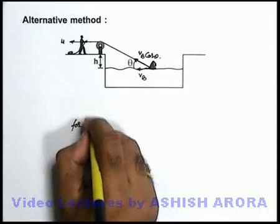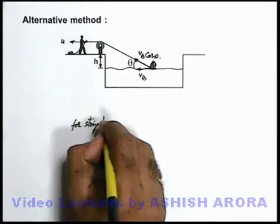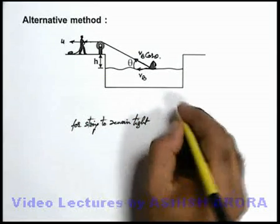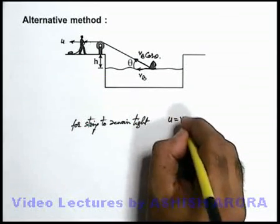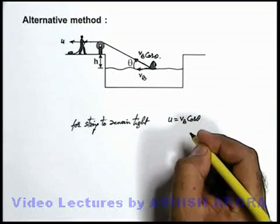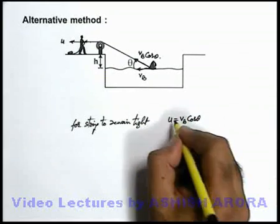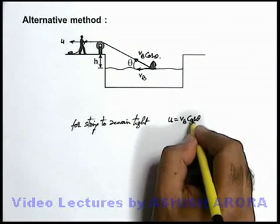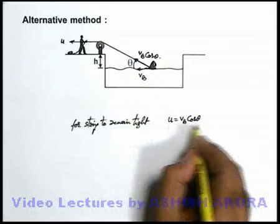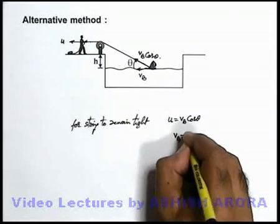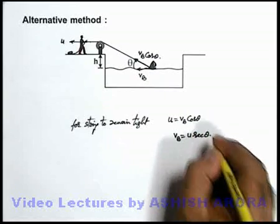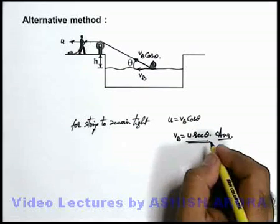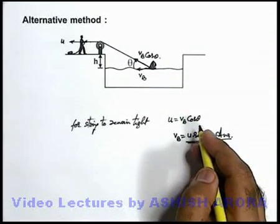So here we can directly state that along the length of the string, the velocity components must remain the same as the string remains tight. For the string to remain tight, we can directly write u = v_b·cosθ. Therefore v_b = u·secθ, which is the answer we arrive at directly using the concept of the string length remaining constant.